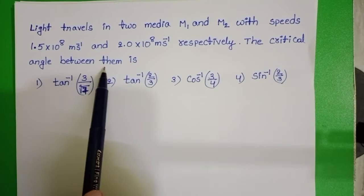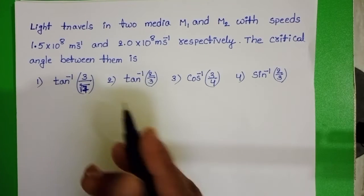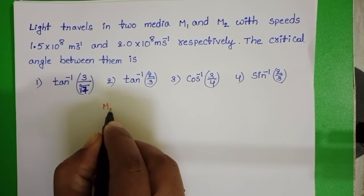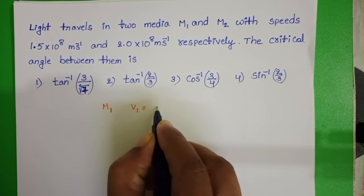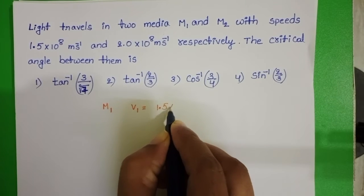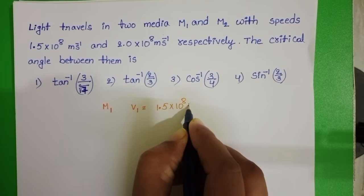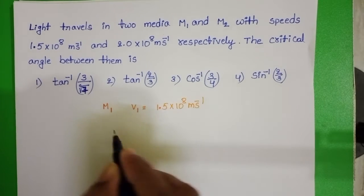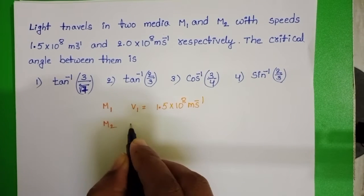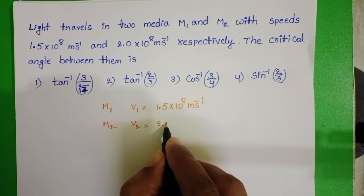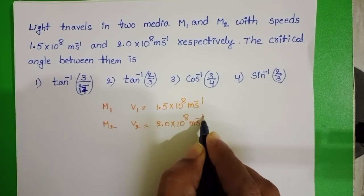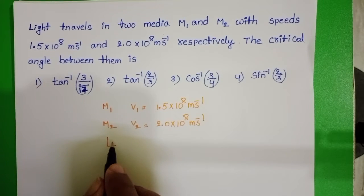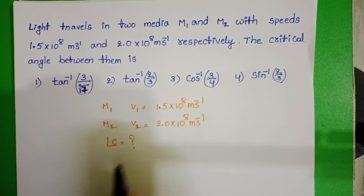The critical angle between them is: speed of light in medium 1, V1, equals 1.5 into 10 power 8 meter per second, and speed of light in medium 2, V2, equals 2.0 into 10 power 8 meter per second. In this question we have to find out the critical angle.